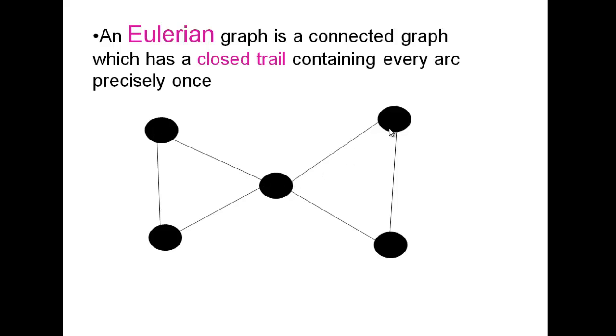We can see here that we can create a closed trail that contains every arc exactly once. In other words, we can create a trail that goes through the whole graph, but we can do that by only visiting each arc once. We can draw around the graph without our pen or pencil leaving the paper and without repeating any of the lines.